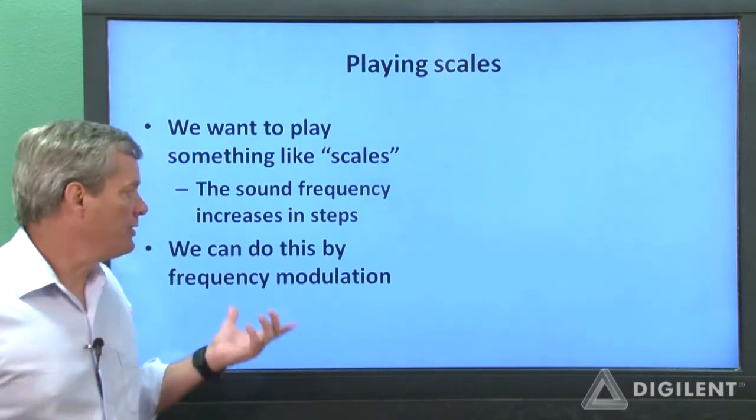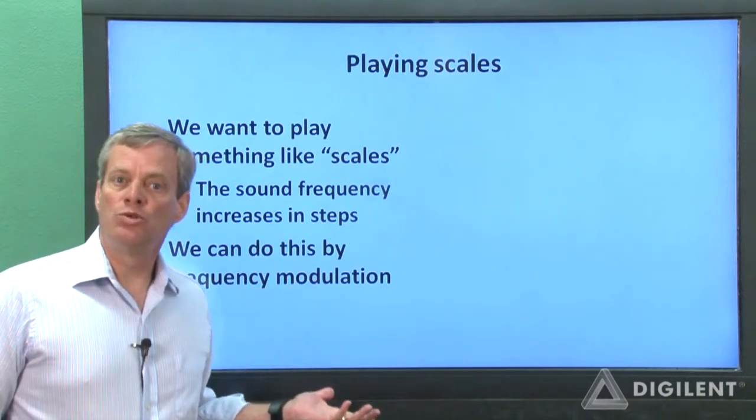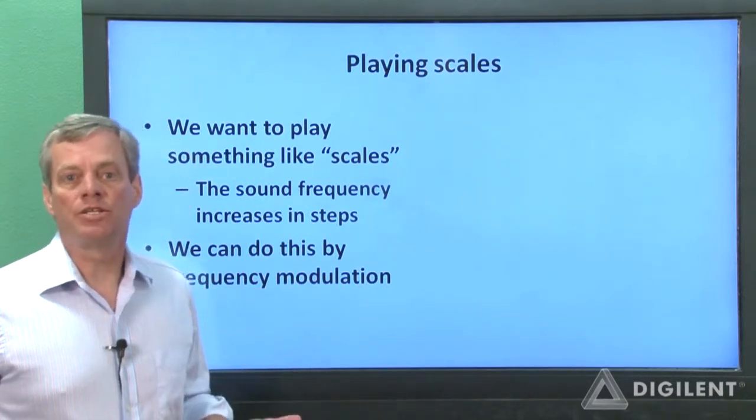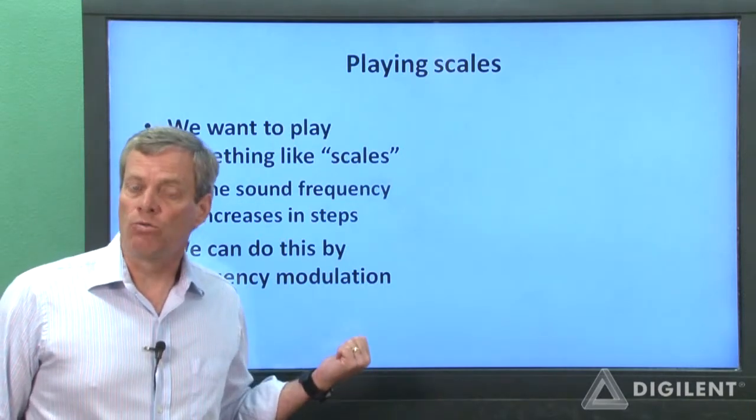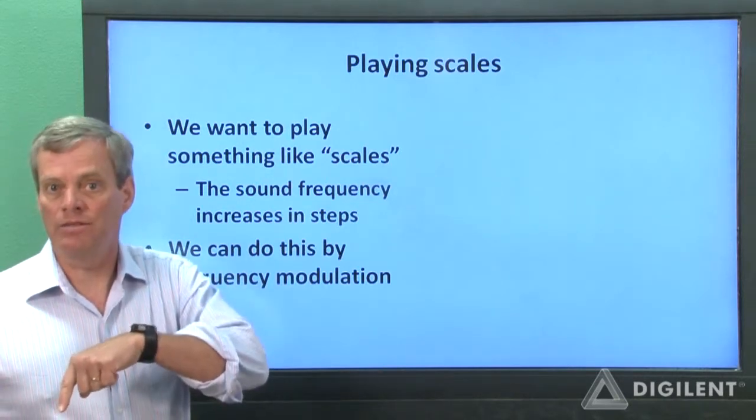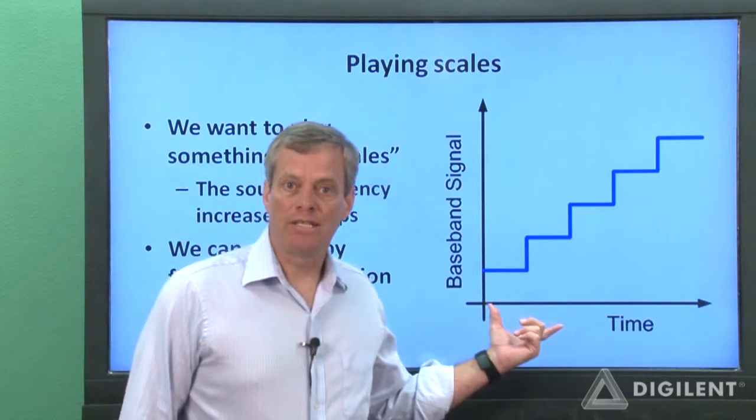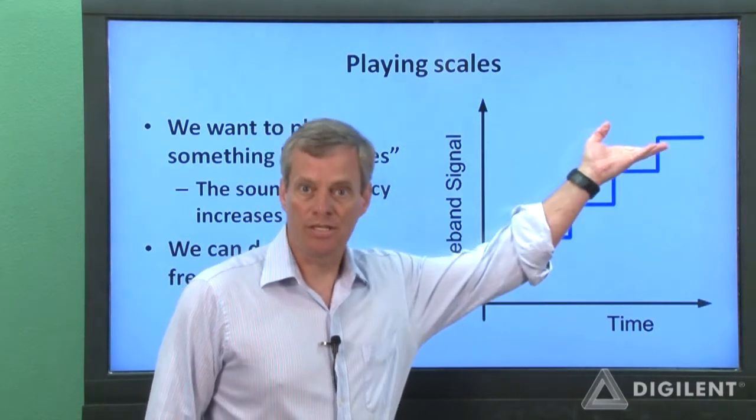The process we'll use is simply frequency modulation. If you recall from the third AWG tutorial project, frequency modulation corresponds to changing the frequency of one signal, the carrier wave, according to the amplitude of a second signal, the baseband signal. So if we want to increase our frequency in steps, we just create a baseband signal whose amplitude increases in steps.